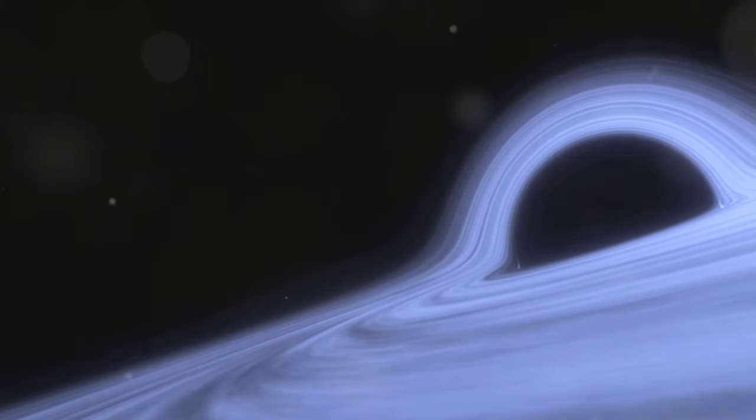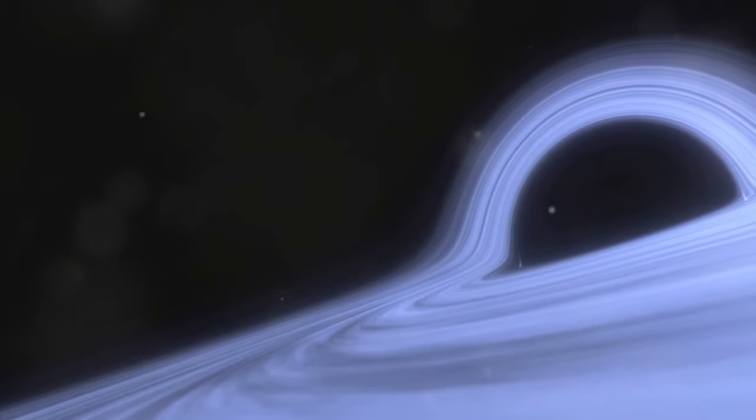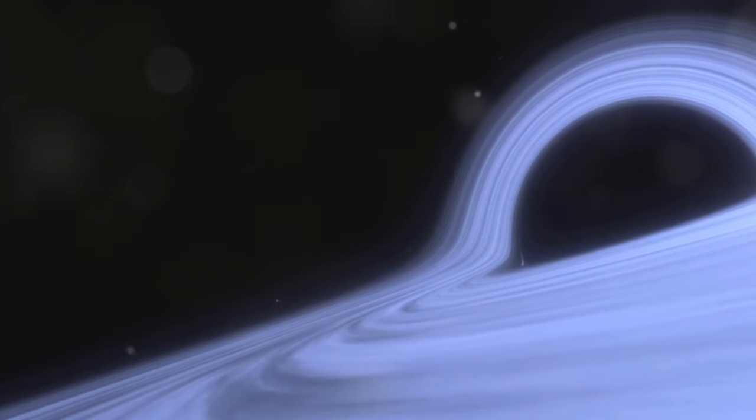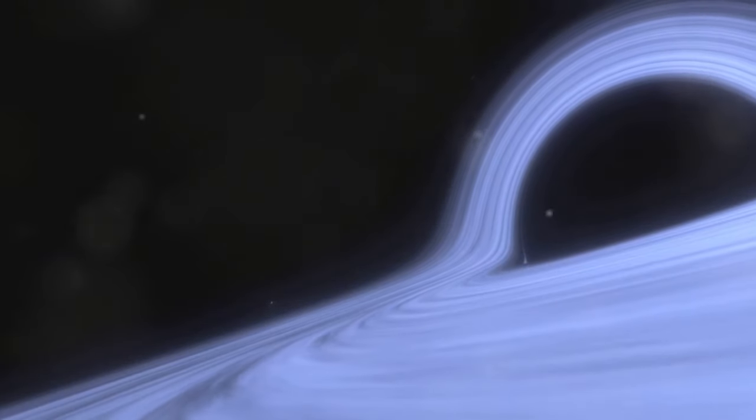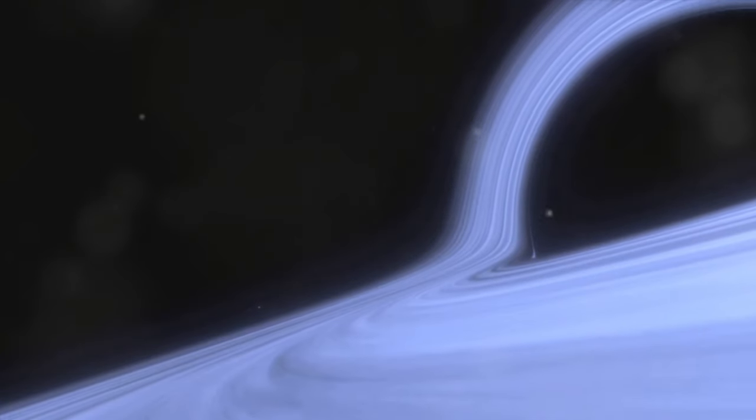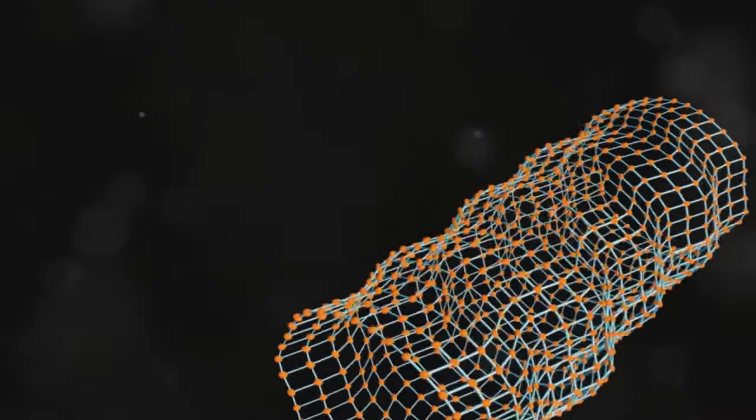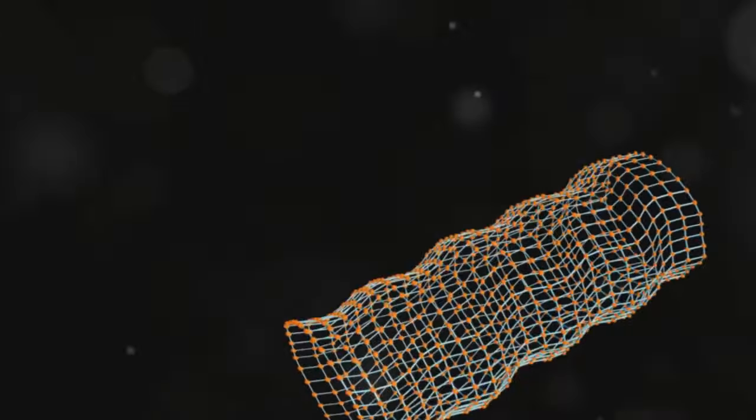LIGO, or the Laser Interferometer Gravitational Wave Observatory, uses incredibly sensitive instruments to detect the minute distortions caused by passing gravitational waves. The detection confirmed a major prediction of Einstein's general theory of relativity and opened up a new way of observing the universe.